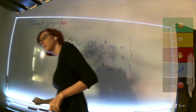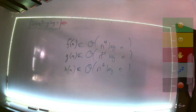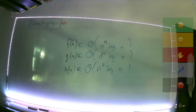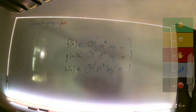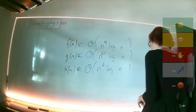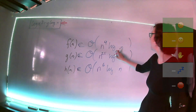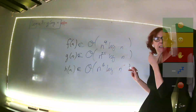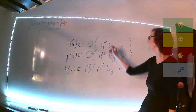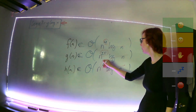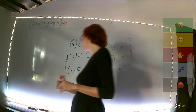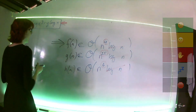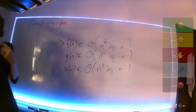Ahora simplifiqué cada una de mis tres funciones para expresarlas de la forma más limpia posible. Para compararlas y saber cuál es la más lenta: si nos fijamos en que todo el mundo está multiplicado por log n, sabemos que de ahí no proviene la diferencia. La diferencia está en las potencias. La función que crece más lentamente va a ser aquella que tiene la potencia más baja. Para mí, la respuesta va a ser f(n) porque mi f(n) tiene la potencia más baja.